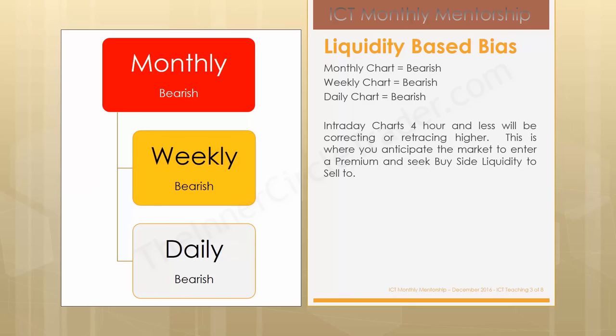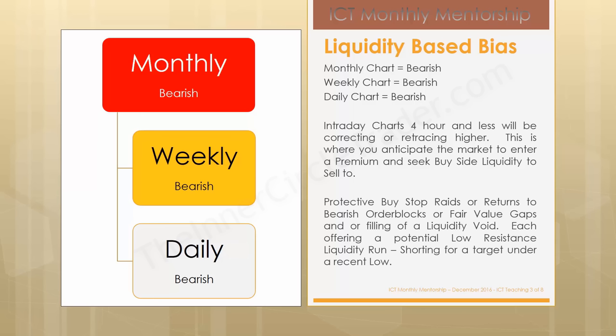When you see those evidences in price along the lines of the monthly, weekly, and daily, we can zero in on the four-hour and start looking for liquidity on the buy side — there's going to be a premium built into the marketplace or a rally. You're going to be looking to sell rallies, protected by stop rates or returns to bearish order blocks or fair value gaps and/or filling of a liquidity void, each offering a potential low resistance liquidity run. Shorting for a target under a recent low — you want to be primarily looking at what's near term on the daily chart and what liquidity is resting there that your short trade could take advantage of, buying back below a daily low where sell stops would be resting.